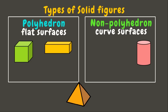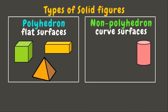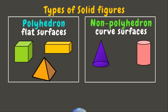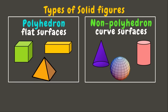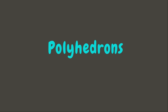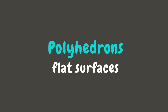Next we have a pyramid, and it is a polyhedron. Then we have a cone — it is a non-polyhedron. And lastly we have a sphere — it is also a non-polyhedron. Wonderful! Now let's learn more about polyhedrons.